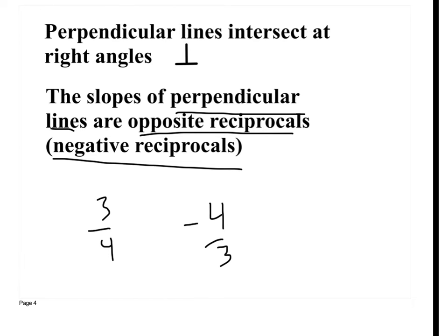They're going to give you the slope of a line — let's say it's one half — and ask you to find the slope of a line that's perpendicular to that. What would the slope be? Negative 2. Negative 2 over 1, which is the same thing as negative 2. So you're going to find the negative reciprocal of that slope.